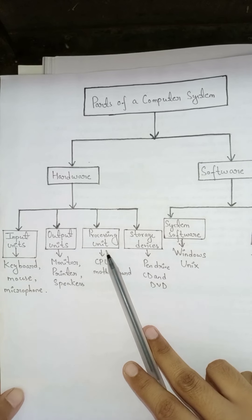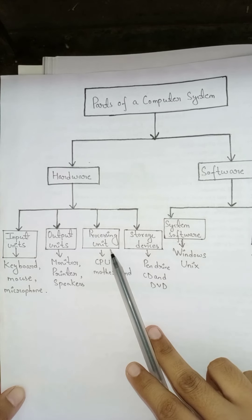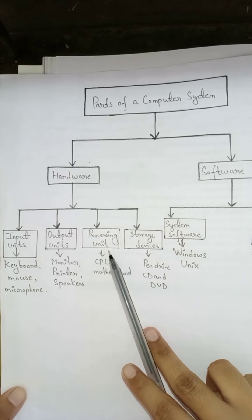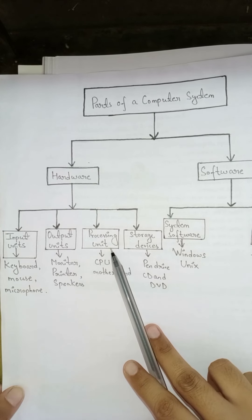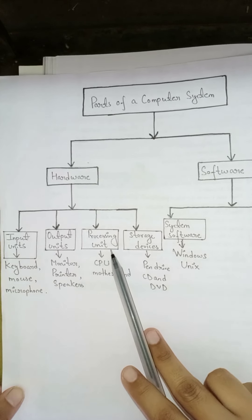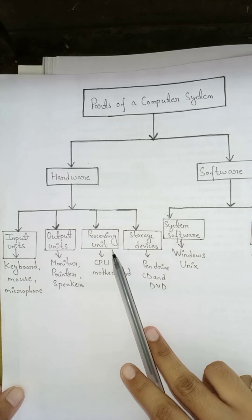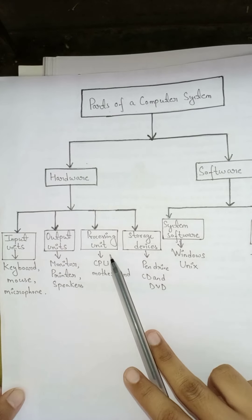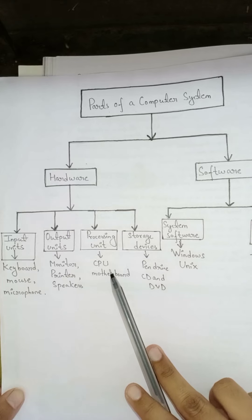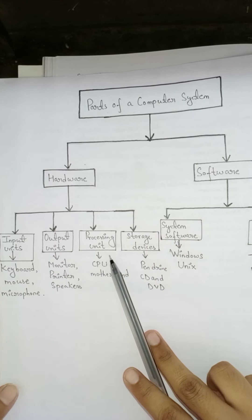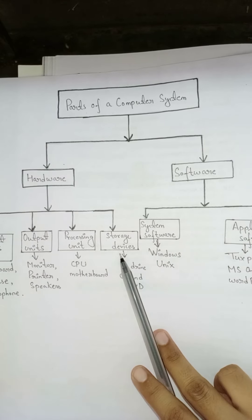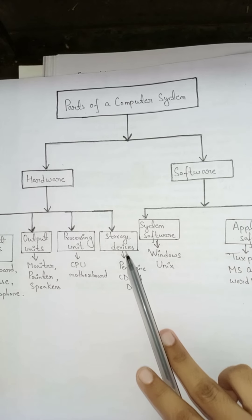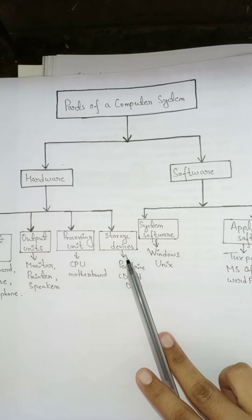Next is the processing device. A processing device is a device which transfers input to output. CPU and motherboard are two examples of a processing unit.